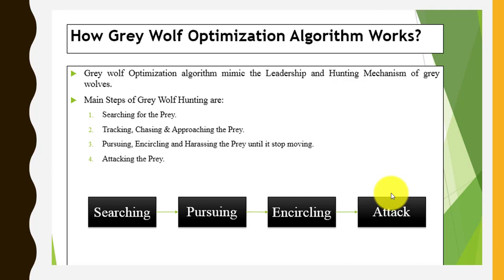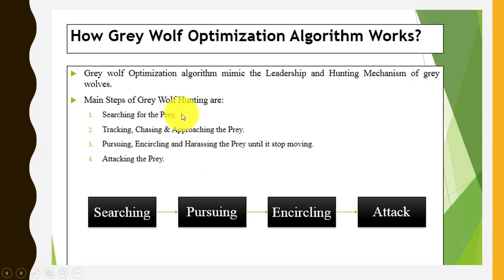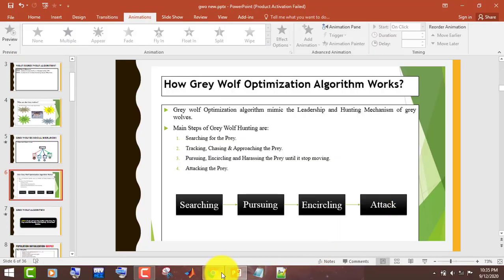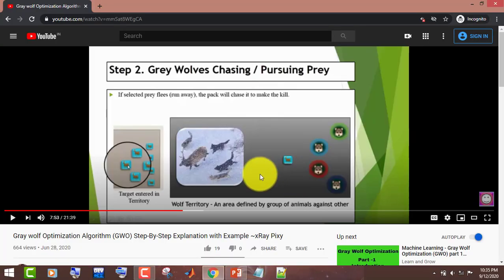This algorithm mimics the leadership and hunting mechanism used by gray wolves. The main hunting steps followed in this algorithm are: first, search for the prey; then track and chase until the prey stops moving; then encircle the prey; and finally, attack.